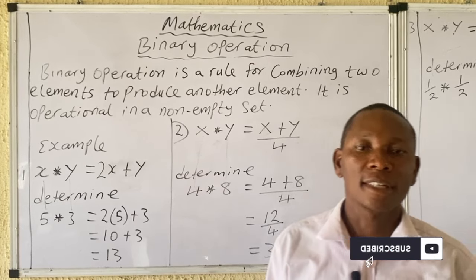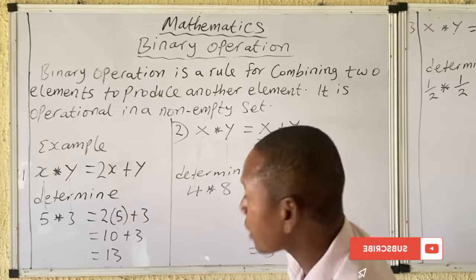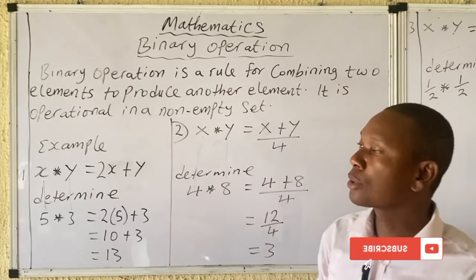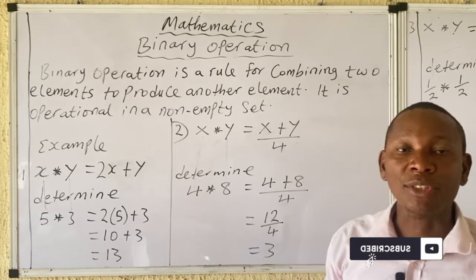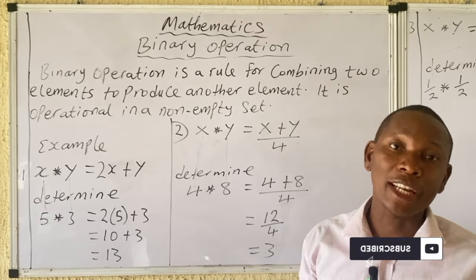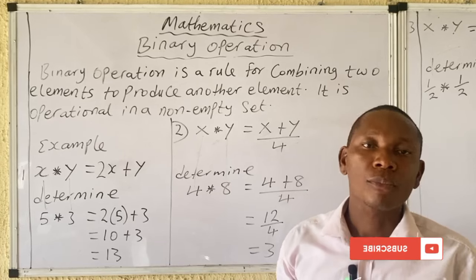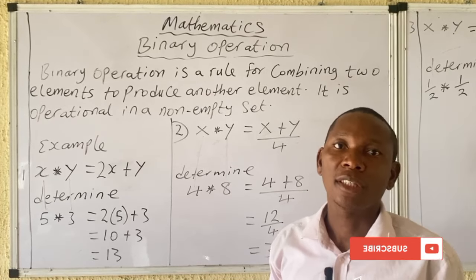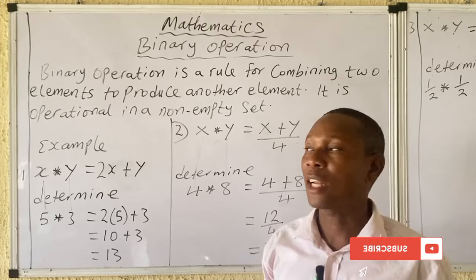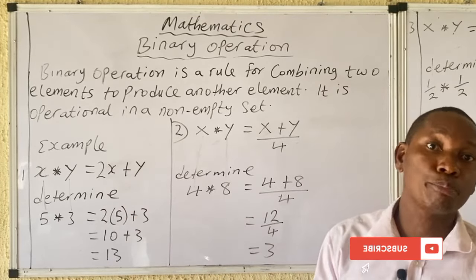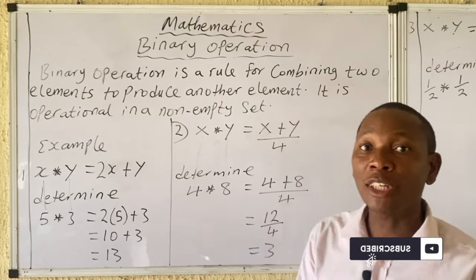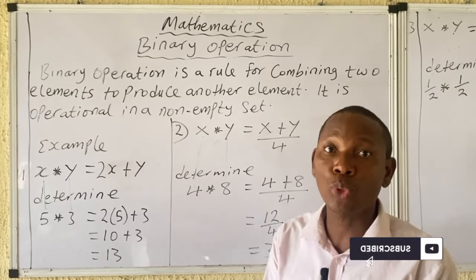Welcome to Science Access. In today's class I'll be starting my lessons on binary operations. A binary operation is the rule for combining two numbers or two elements to form another element. It operates on a non-empty set. Let's take a look at some examples to make solving binary operations easy.